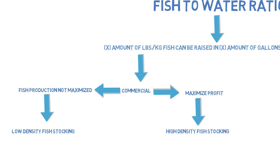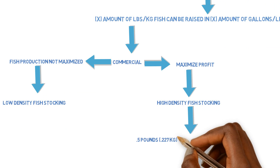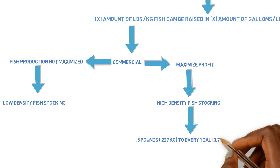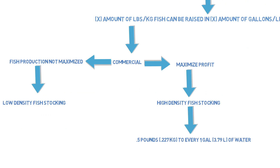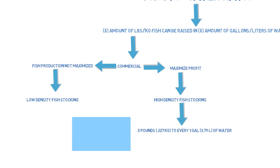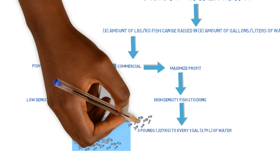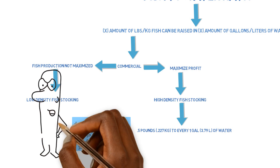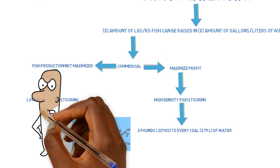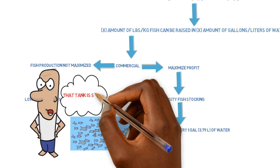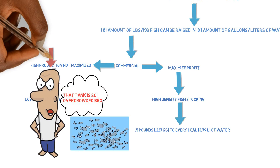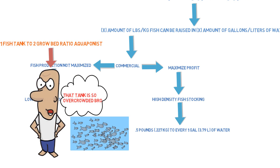On a commercial scale, if you want to maximize profits, you typically want a fish-to-water ratio of about half a pound of fish to every one gallon of water. This is the profit maximizer when it comes to the fish part. Some people see fish tanks with high stocking densities and automatically assume it's overcrowded, just making assumptions without doing proper research, throwing it out based on speculation.